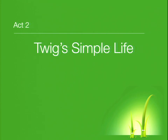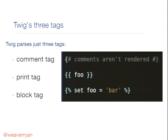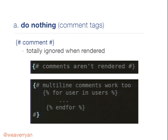Twig has exactly three tags. Twig is just like PHP — if you write HTML, it's just HTML until you open up a Twig tag. There are three tags: the comment tag, the print tag, and the block tag. First, the comment tag — I call it the 'do nothing' tag. It's curly brace, hash. It's a comment. It can be single line or multiple line. It does nothing. Boom — 33% of the way home.